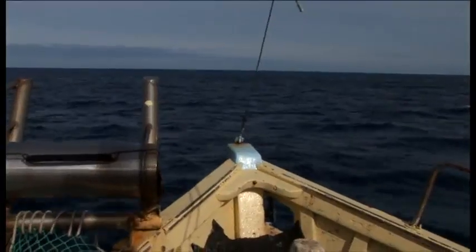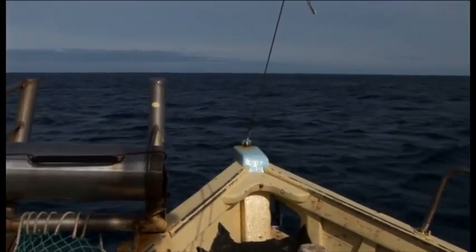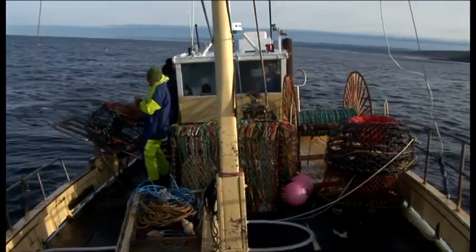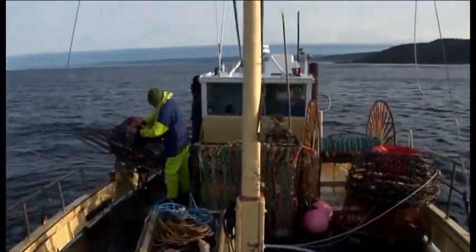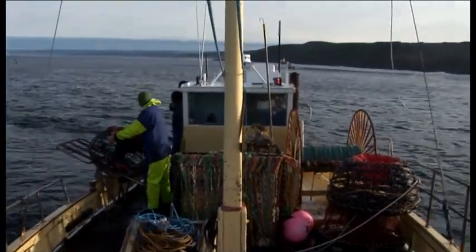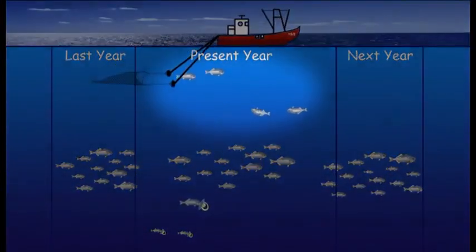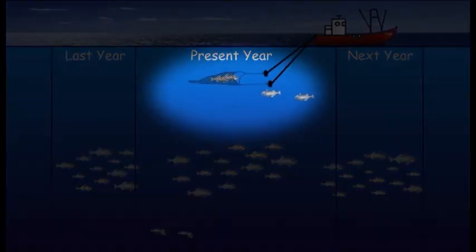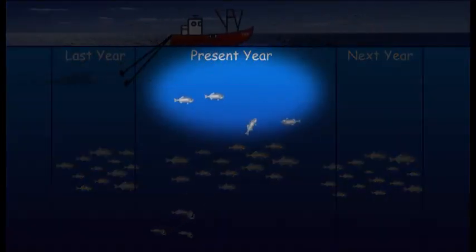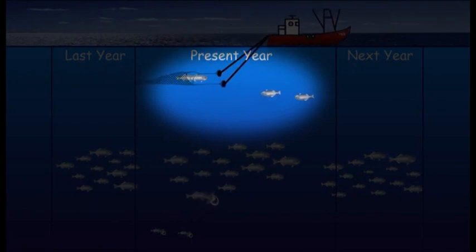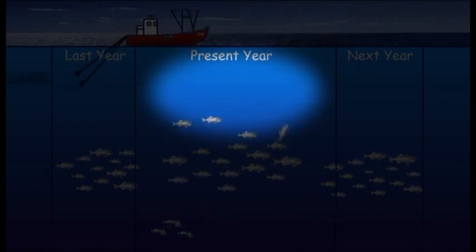Longer living fish have lower natural mortality. Some level of natural mortality is occurring all the time, but once you start harvesting a fish population, the fish you catch or kill become one of the major sources of mortality. This is termed fishing mortality and is represented with the letter F. You can see where natural mortality and fishing mortality fit in our diagram, and the combination of these two gives us total mortality, represented by the letter Z.